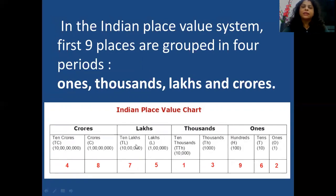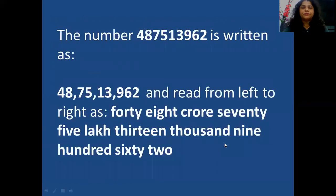Now look at the number given below: 487513962. How will we read this number? First, before reading the number, we have to separate it based on the periods. In the ones period we have ones, tens, hundreds — so we put a comma after the hundreds place. In the thousands period we have thousands and 10,000s — so after two digits we put a comma.